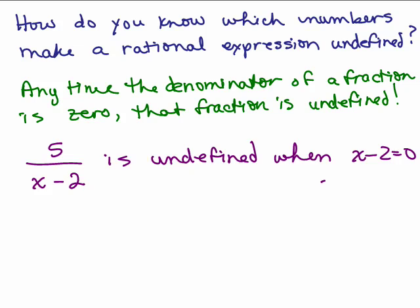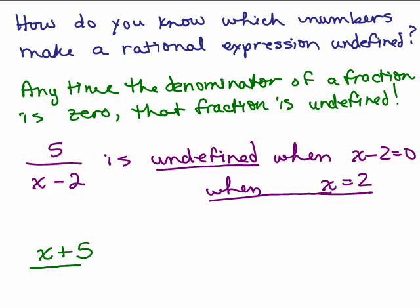So that means x equals 2 is what makes it undefined. If x is 2, it makes that fraction undefined. Undefined when x equals 2. Let's do another one: x plus 5 over 3x. When is a rational expression undefined? It's when the denominator equals 0. Notice it has absolutely nothing to do with the numerator — we don't care about the numerator at all when determining if a rational expression is undefined. This is only undefined when the denominator is 0.